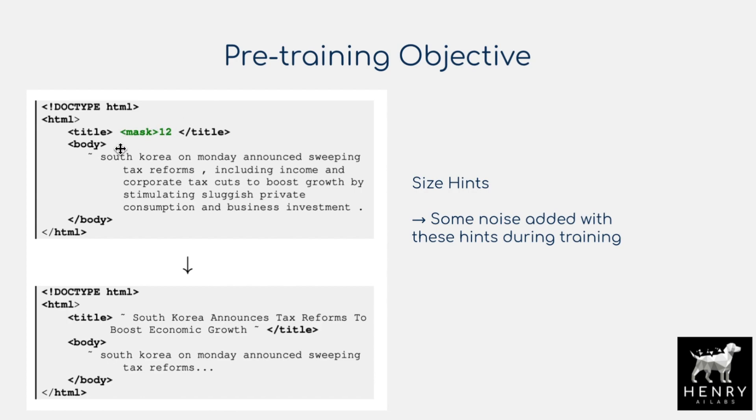So if 12 tokens have been masked out, the model receives some distribution over values like 10, 11, 12, 13, 14 — a distribution signaling how many tokens have been masked out, used to structure this pre-training objective.